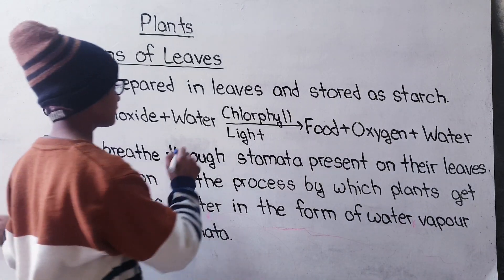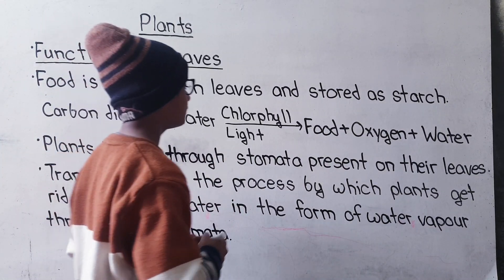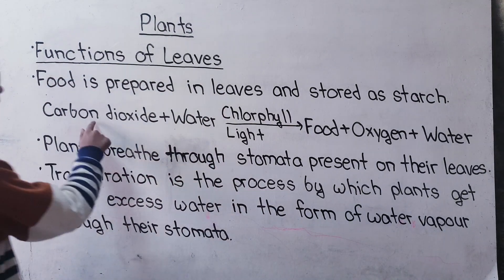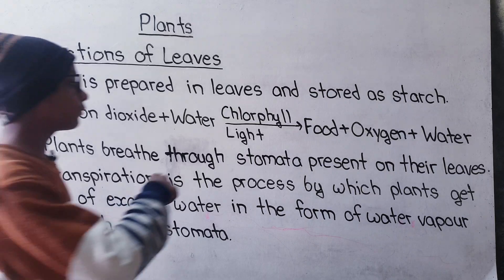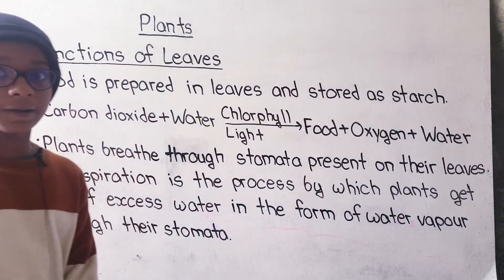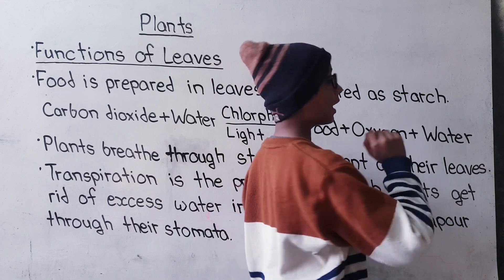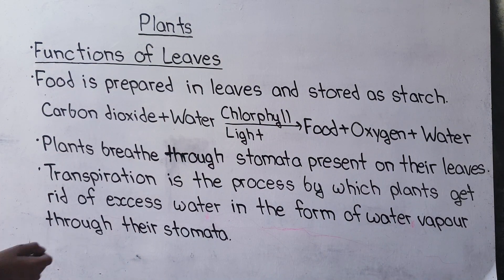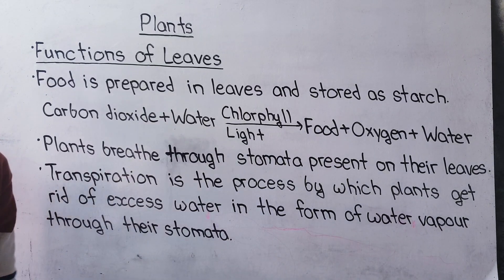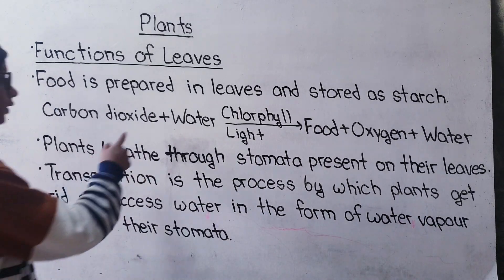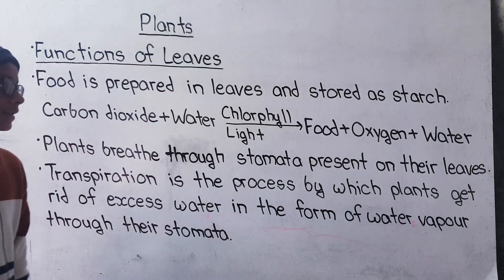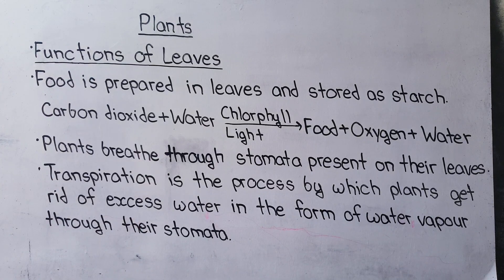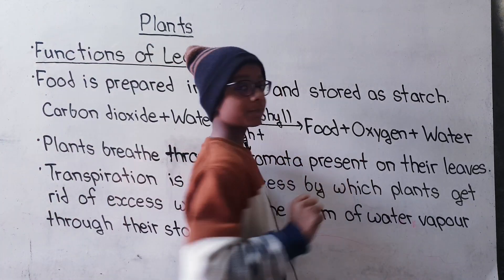Carbon dioxide plus water, with chlorophyll and light, is equal to food plus oxygen plus water. So when carbon dioxide and water come into contact with chlorophyll and light, food is made along with oxygen and water, and this is released from the leaves.